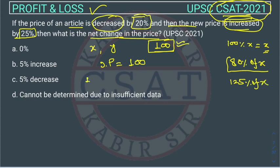So here the first condition is that the price of an article decreased by 20%. So there is a decrease of 20%. So we can directly write 80% of initial price. What is the initial price? 80% of 100, then it will become 80 rupees.